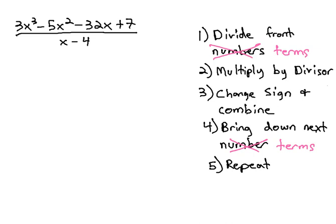Let's take a look at this problem. 3x cubed, minus 5x squared, minus 32x, plus 7, divided by x, minus 4. If we write it as a long division problem, the x minus 4 into 3x cubed, minus 5x squared, minus 32x, plus 7.